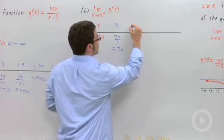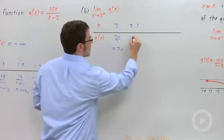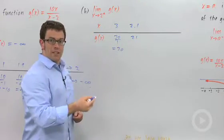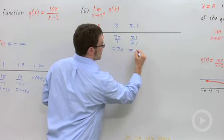Let's try a little closer to 2: 2.1. 10 times 2.1 is 21 over 2.1 minus 2, over 0.1, that's going to be 210.